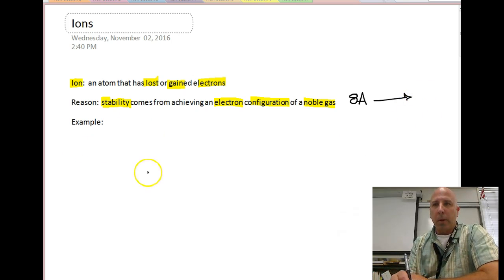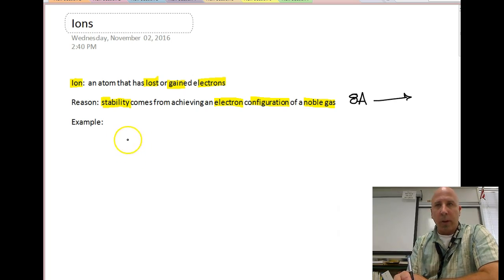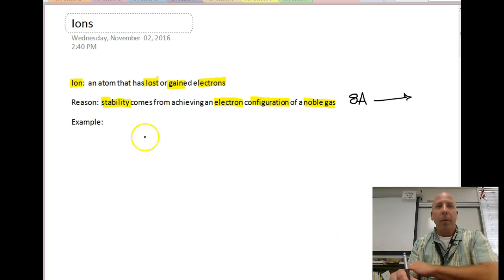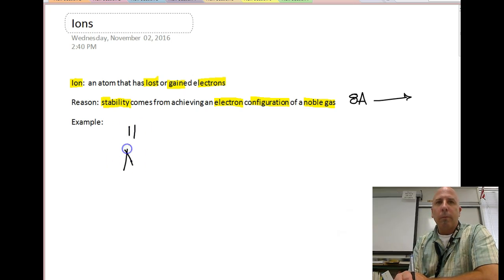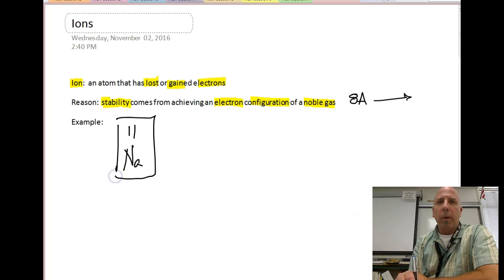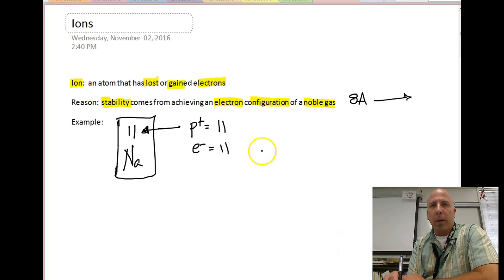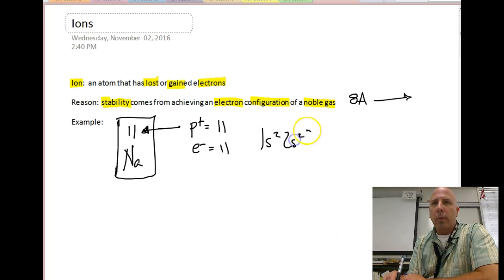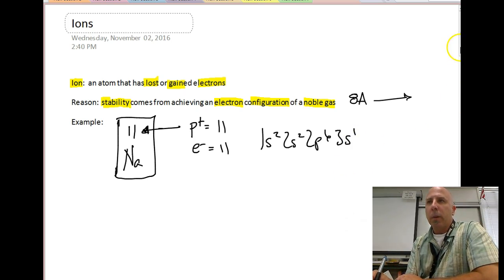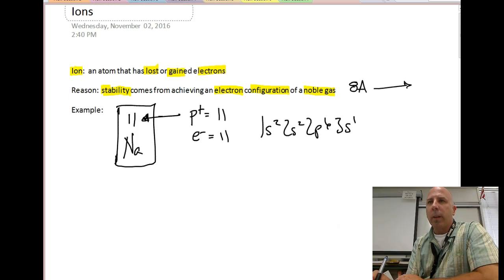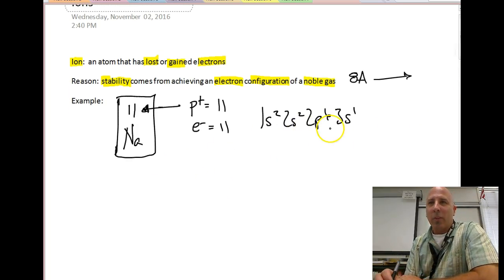We're going to give you an example here of how an atom forms an ion and what it really does to the charge of that atom. So we'll use the example of sodium. Sodium, when it's in its neutral state, has an atomic number of 11, so it has 11 protons and 11 electrons. The electron configuration is 1s2, 2s2, 2p6, and 3s1. It turns out this is slightly unstable, and sodium in this form is actually very unstable.